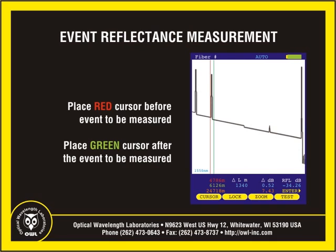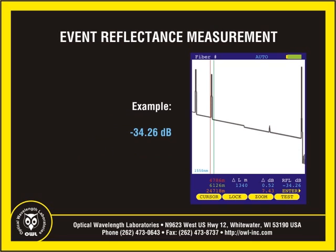The reflectance of a specific event can be determined by placing the cursors on the backscatter line on either side of the event. The OTDR will show the reflectance in dB of the most reflective event between the cursors. In this example, the reflective event being measured has a reflectance of negative 34.26 dB. This has been another instructional video from OWL, the wise choice in fiber optic test equipment. For more information about additional instructional videos or OWL fiber optic test equipment, please visit OWL's website at owl-inc.com.